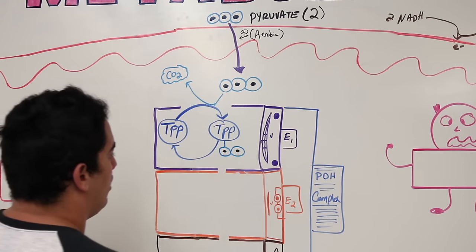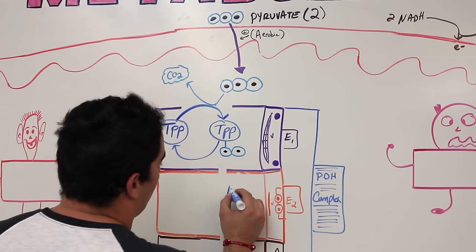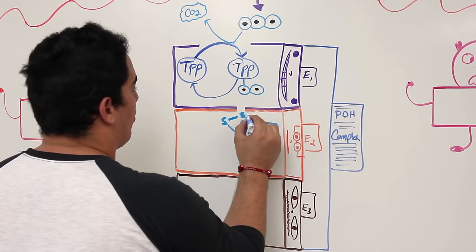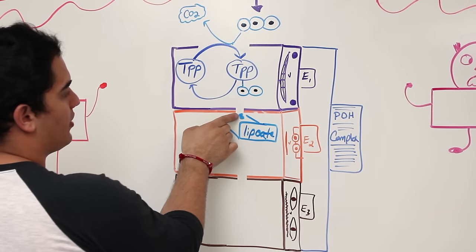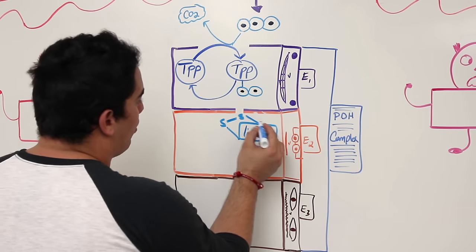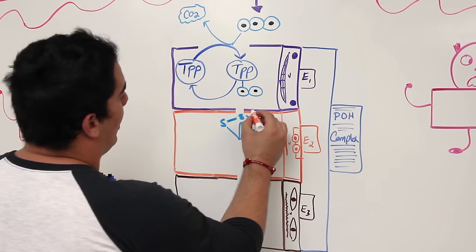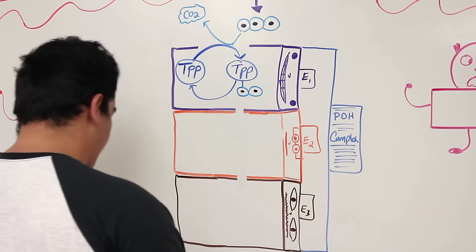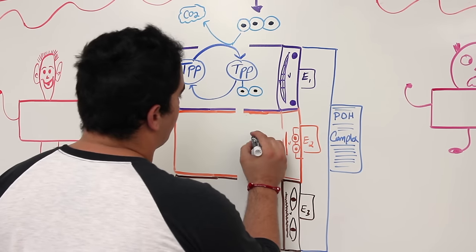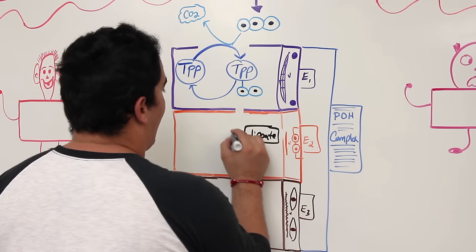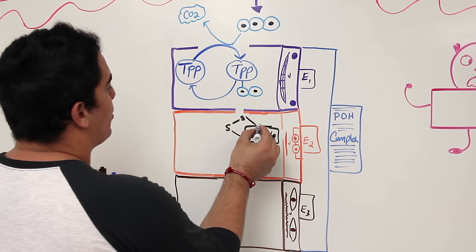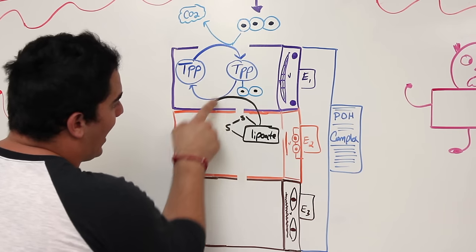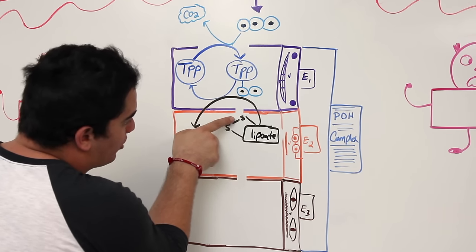Inside enzyme two there is a molecule called lipoate, which is special because it has disulfide bonds — a sulfur bonded to another sulfur. The thiamine pyrophosphate passes the acetyl group onto this lipoate, breaking that disulfide bond.